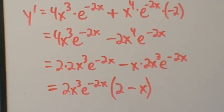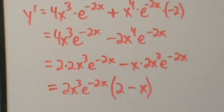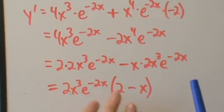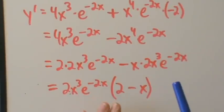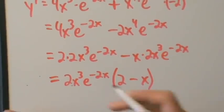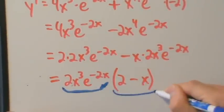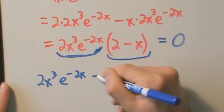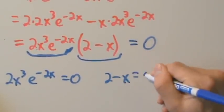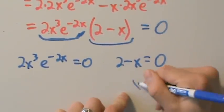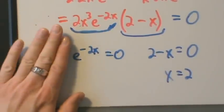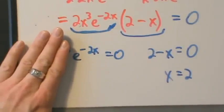Now we set the derivative equal to zero to find the critical points. There are no values of x that make this derivative undefined, so we just solve for where it equals zero. Setting each factor equal to zero: 2x cubed e to the negative 2x equals zero, or 2 minus x equals zero. The second gives x equals 2 immediately.